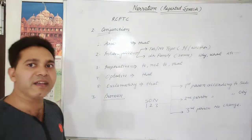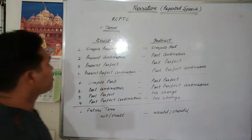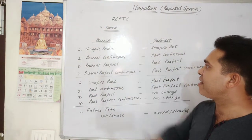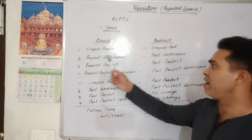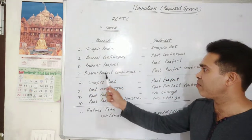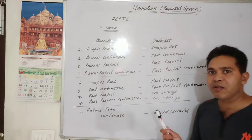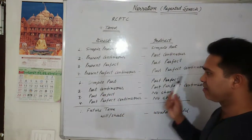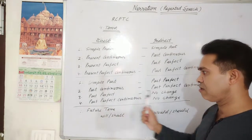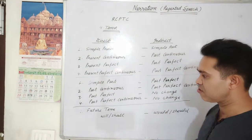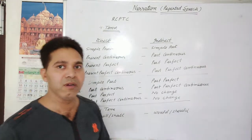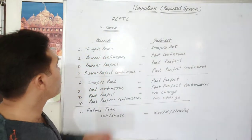T for tense. How do we change tense? Simple present tense goes into simple past tense. Present continuous tense goes into past continuous tense. Present perfect tense goes into past perfect tense. Present perfect continuous tense goes into past perfect continuous tense. Simple past tense goes into past perfect tense; past continuous tense goes into past perfect continuous tense. Past perfect tense — no change. Past perfect continuous tense — no change. In future tense, in place of 'will' or 'shall', we use 'would' or 'should'.